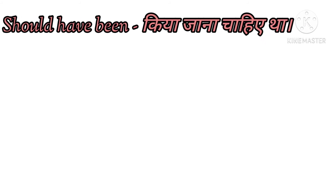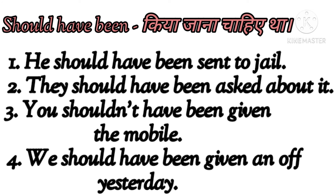Now let's understand 'should have been' in the sense of kiya jana chahiye tha. Usse wahan bheja jana chahiye tha. Hameh yeh pataya jana chahiye tha. Whenever we use this sense, we always end up using passive voice and the third form of the verb. He should have been sent to jail. Here we have used the verb's third form in each sentence: 'send' became 'sent,' 'give' became 'given,' and 'ask' became 'asked.'